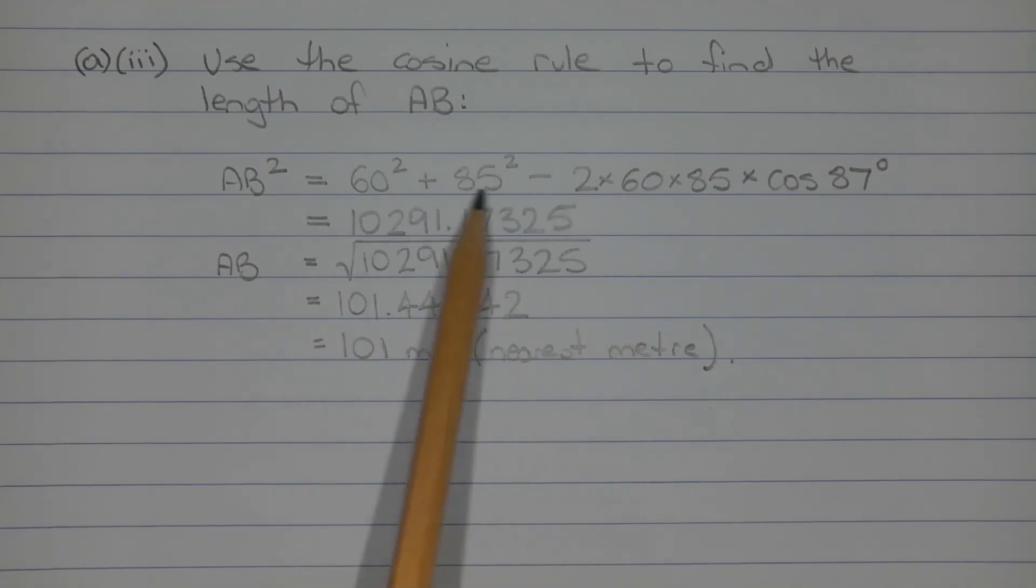Now, it's important to understand that this value here is the square of the distance that we're after. So we need to take the square root of this value to find AB, which is the distance from point A to point B. So taking the square root of this value here, we get AB is equal to 101.44542 and so on.